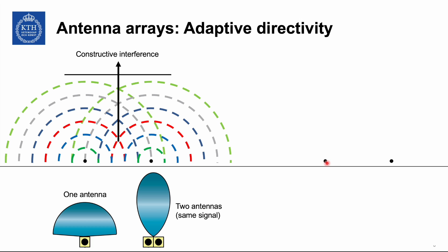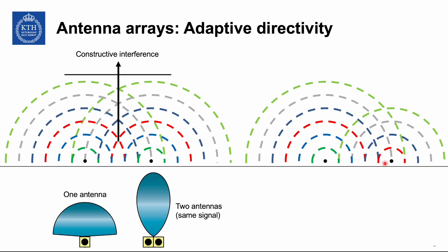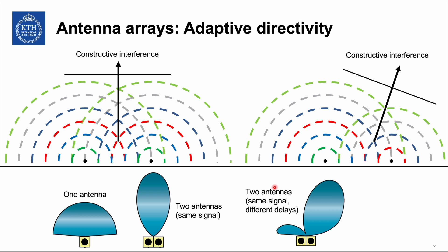We can control directivity by varying what is sent from each antenna. With the same two antennas, delaying the signal on the second antenna causes constructive interference in a different direction, steering the beam. This is electrically equivalent to physically rotating the antenna array — instead of mechanical rotation, we delay or phase-shift the signals to control directivity in an electrical way.